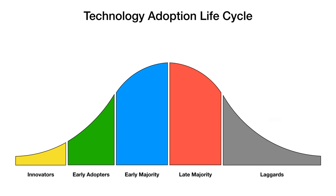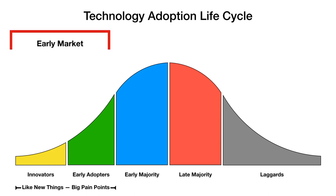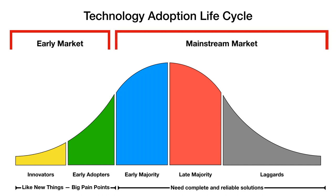The innovators and early adopters are the folks that like new things and have big pain points or some sort of vision — this is really the early market for any new technology. All the rest of the people under this curve need complete and reliable solutions; this is the mainstream market. They don't want to tinker with the technology or assemble it themselves — they want a complete solution that works right out of the box.